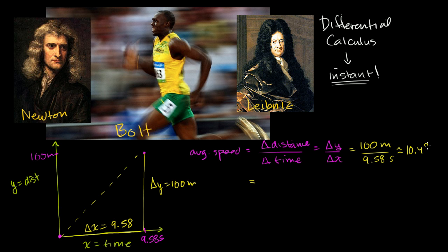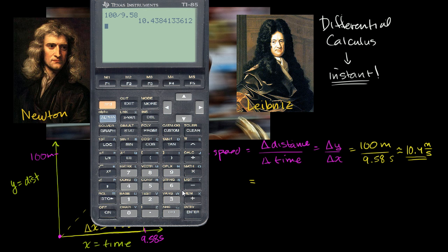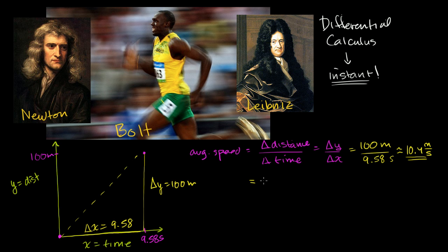And that is his average speed. To see how this is different than instantaneous speed, and just to have a concept of how fast this is — there are 3600 seconds in an hour, so multiplying 10.4 by 3600 gives meters per hour. Dividing by roughly 1600 meters per mile gives approximately 23.5 miles per hour.